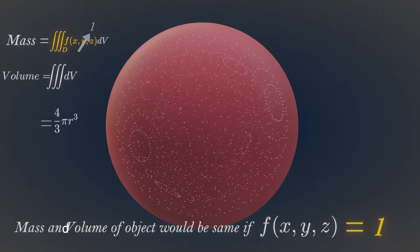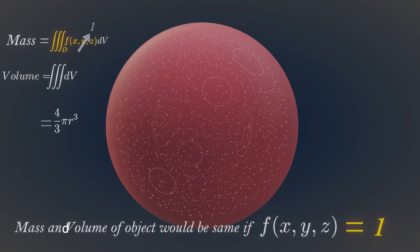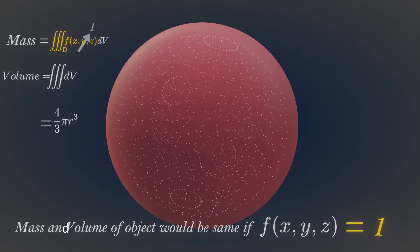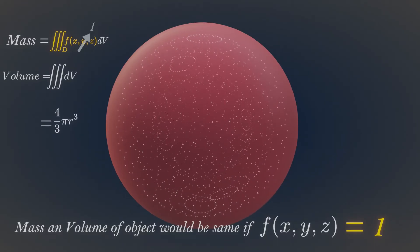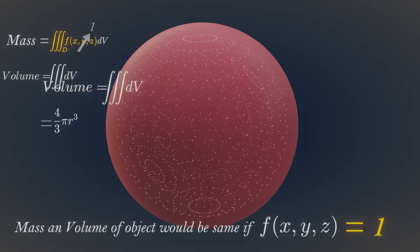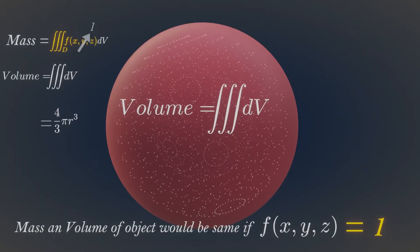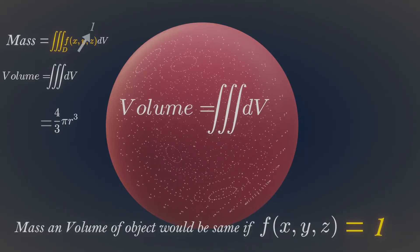The mass and volume of the object in this case would be same. And this is a volume integral. Thus the volume integral is just a triple integral with the scalar field defined by constant 1.